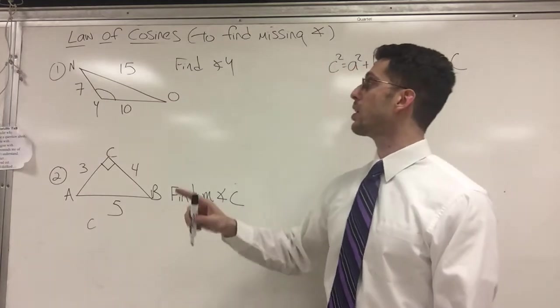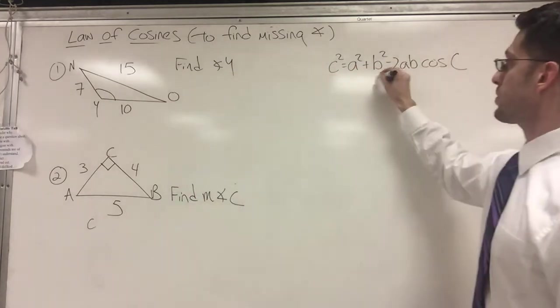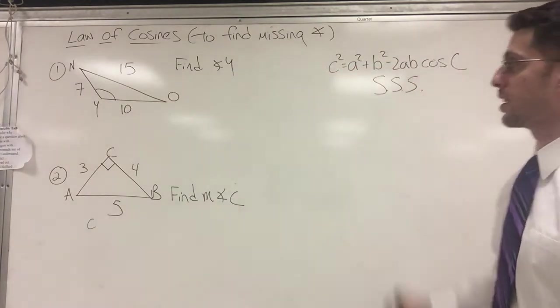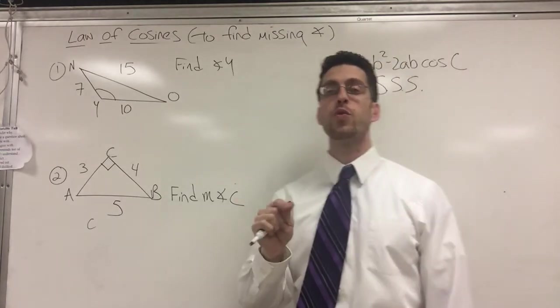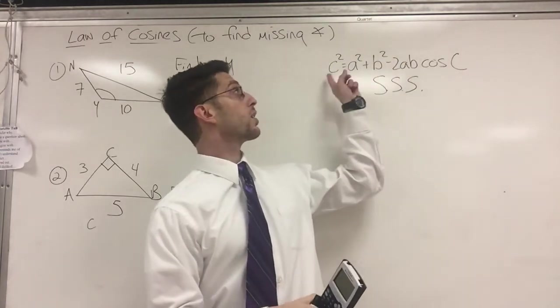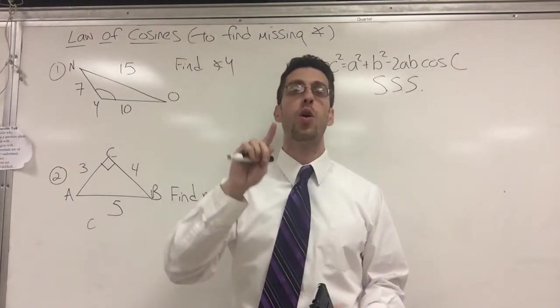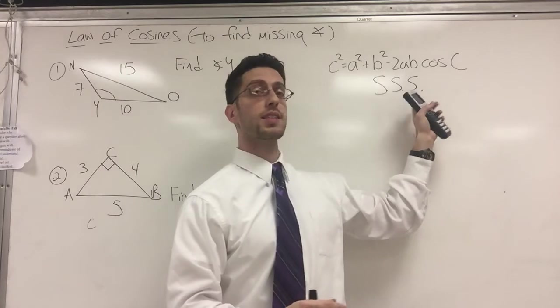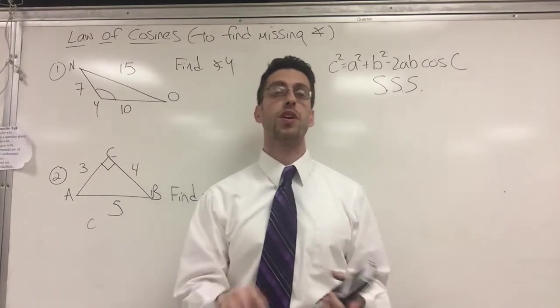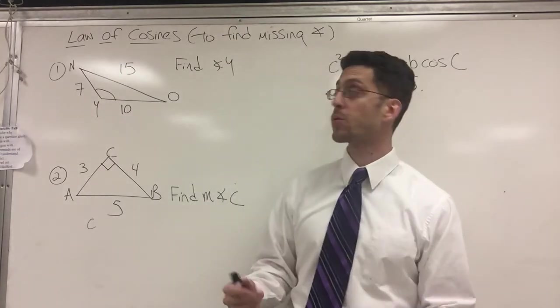If I have three sides, that means I have side, side, side. And I mentioned, if you're trying to find a side, if you're trying to find A, B, or C, and you have side angle side, you use the law of cosines. Also, if you have side, side, side, you use the law of cosines when you're trying to find an angle.